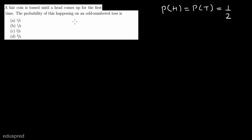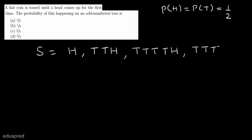Let's list down all the outcomes. Let this be event S. The first possible outcome is that the head comes on the first toss, so it's H. The second possible outcome is tails on the first two tosses and heads on the third toss, so it's TTH. Similarly, the third possible outcome is tails on the first four tosses and heads on the fifth toss, TTTTH. And similarly we could have 6 tails followed by a head, and so on.